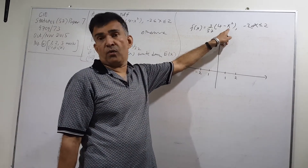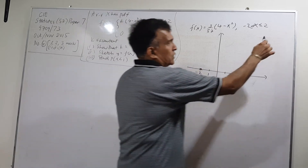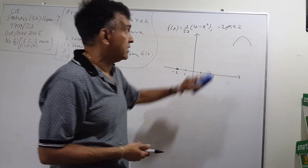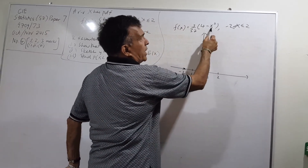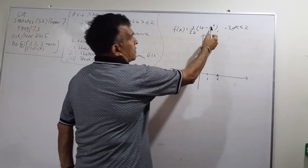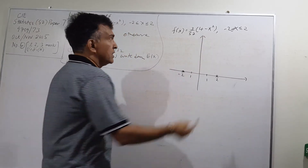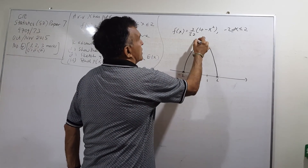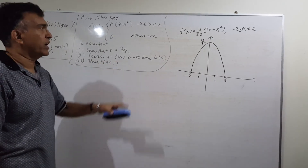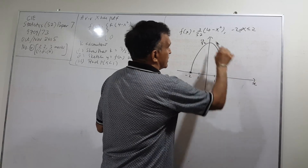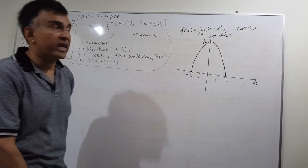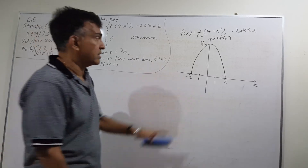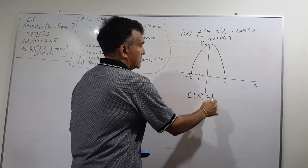At x = negative 2 and x = 2, the function equals zero — those are the endpoints. The maximum occurs on the y-axis: when x = 0, f(0) = (3/32) times 4 = 12/32. The curve is a symmetric inverted parabola. Because of this symmetry over the interval negative 2 to 2, the expected value of X is simply 0.